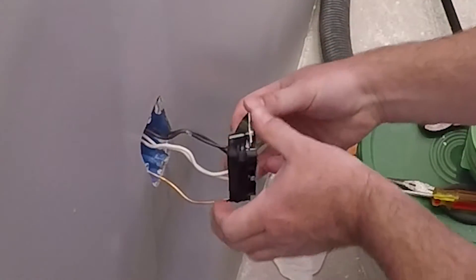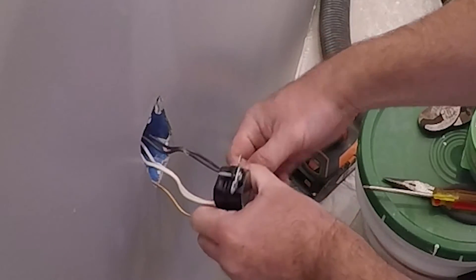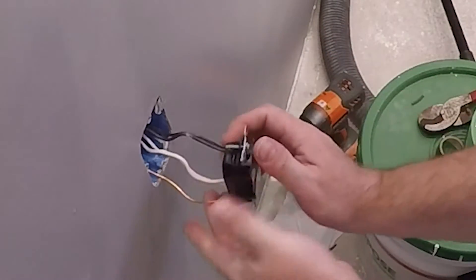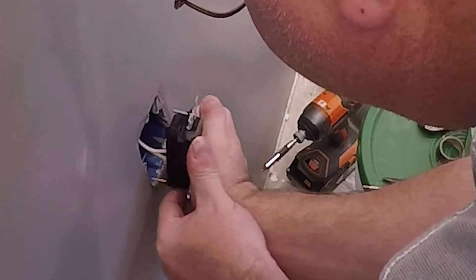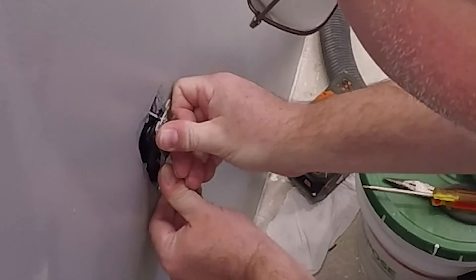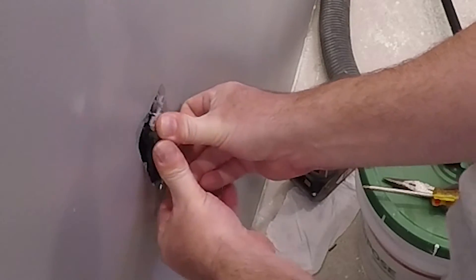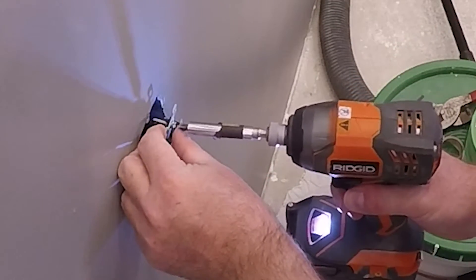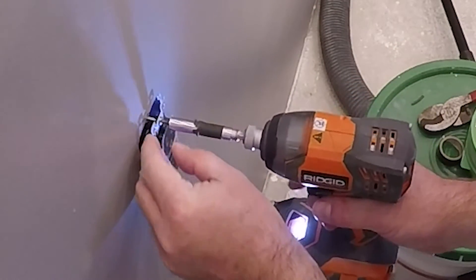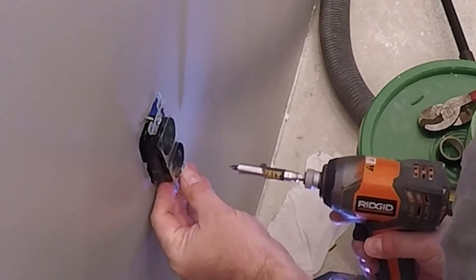That helps minimize chances of the ground wire coming in contact with the neutral or hot. Now the breaker supplying this circuit is an AFCI-GFCI combination breaker. So it's important that you have good ground connection and good neutral connection.